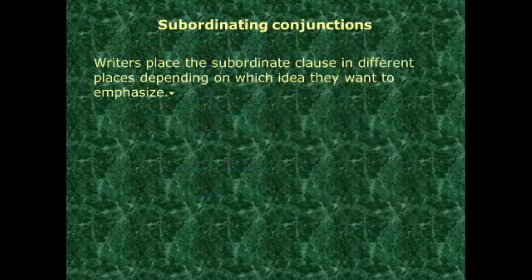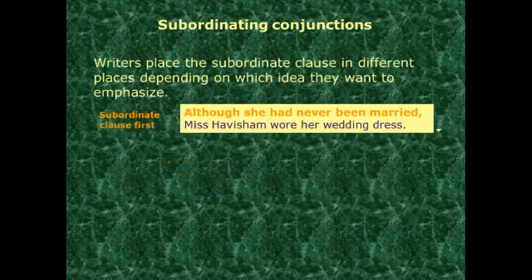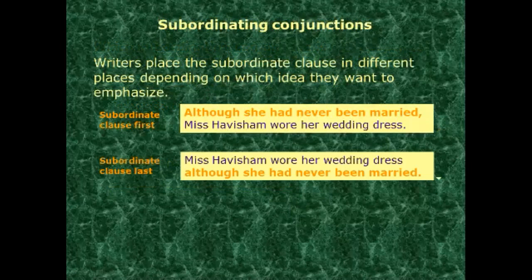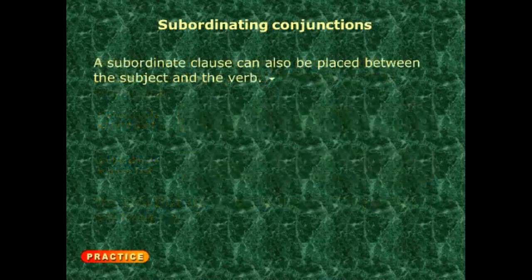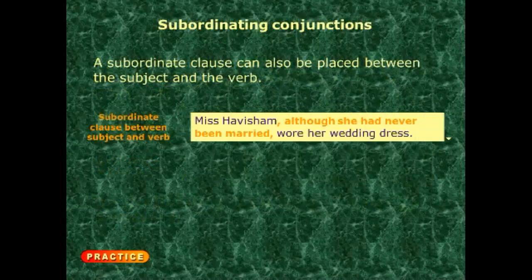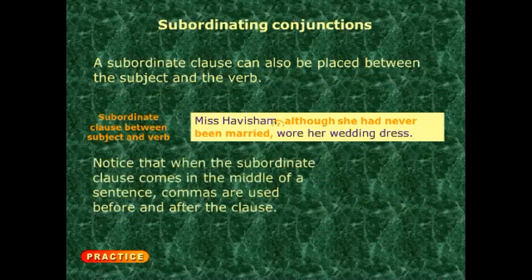Writers can place subordinating clauses in different positions. The dependent clause can come first or at the end of the sentence. Be careful: the idea that comes last is the one the reader will focus on — so place the most important idea at the end. Also, a subordinating clause can be placed between the subject and verb of the independent clause, and when you do that, you use two commas to separate it.